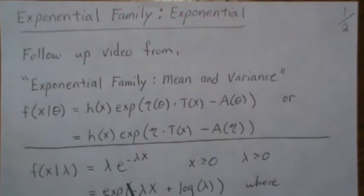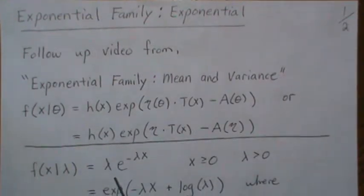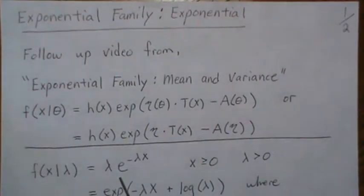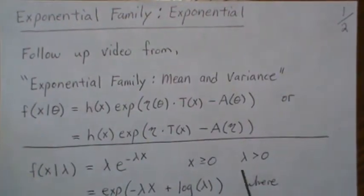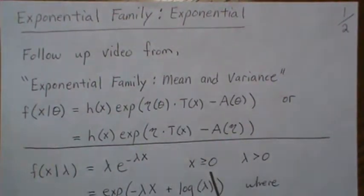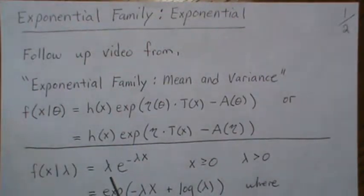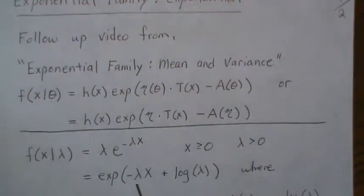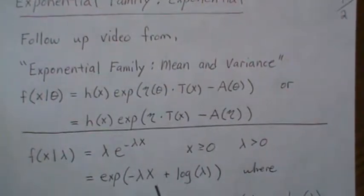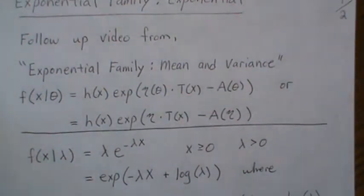This is how we define the exponential distribution where lambda is positive, x is greater than or equal to zero. We take lambda and write it as e to the log of lambda, and of course that gets us lambda back, but then we can combine the exponents of the e part.